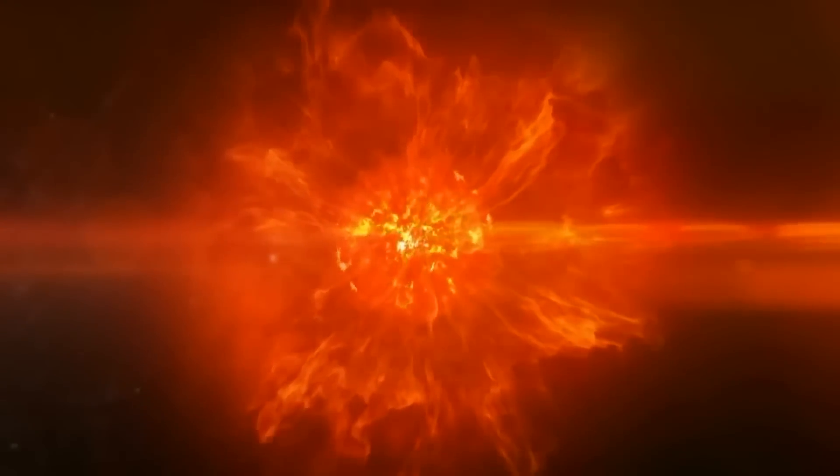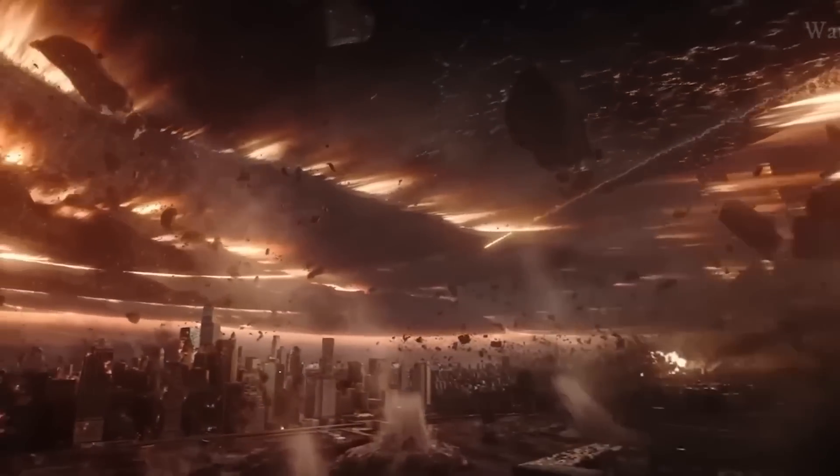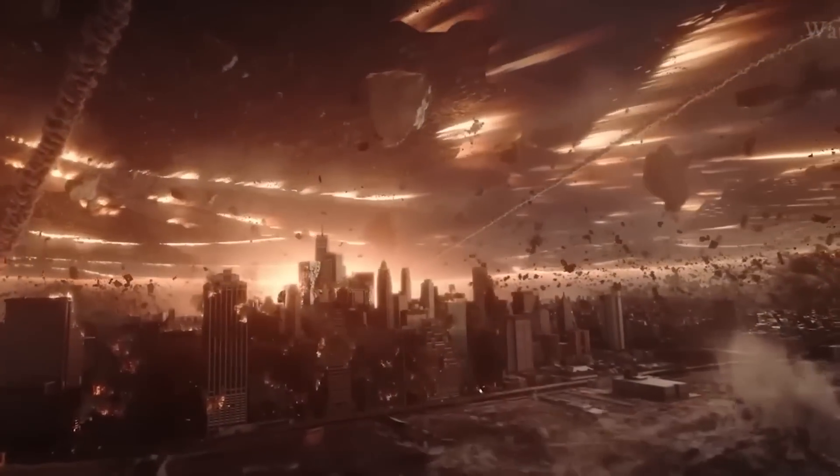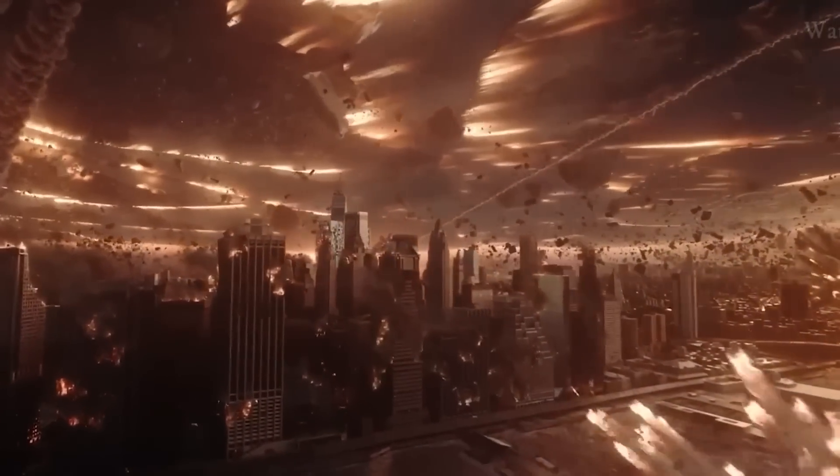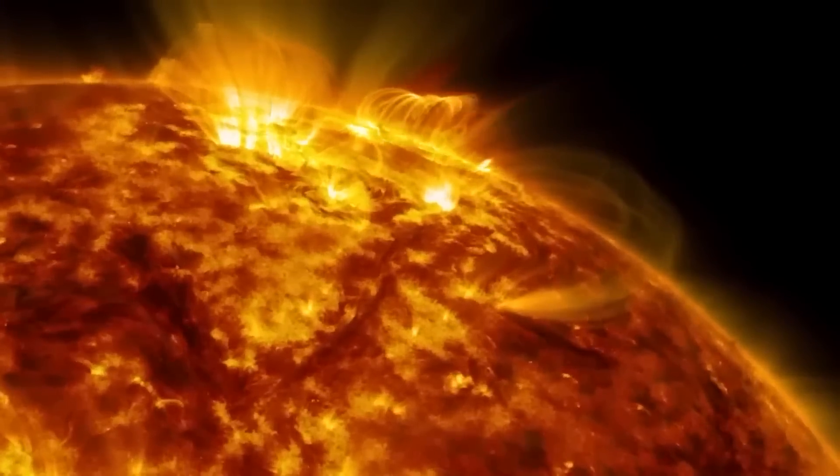The frequency of supernovae depends on your perspective. According to the European Space Agency, a supernova occurs once every 50 years in a galaxy the size of the Milky Way. This is equivalent to one supernova happening every 10 seconds in the entire universe. However, most of these events are too far away for us to see. There are two main kinds of supernovae, type 1 and type 2.